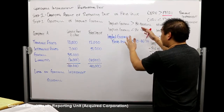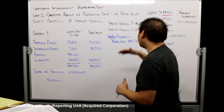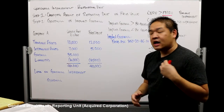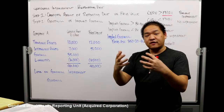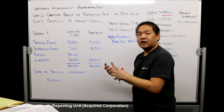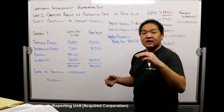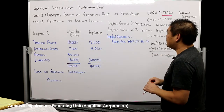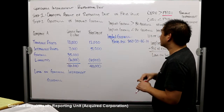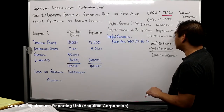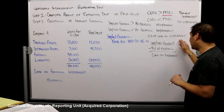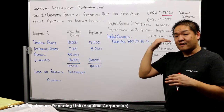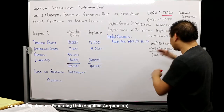We calculate this implied goodwill and the decision point is: if the implied goodwill is greater than the book value of goodwill we carry, there is no impairment — we never recognize gains or increases in asset value, so from a conservatism standpoint we don't write up goodwill. But if the implied goodwill is less than the book value of goodwill, there is an impairment. We calculate the loss as implied goodwill minus book value of goodwill.